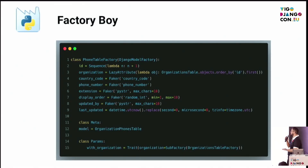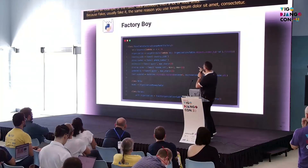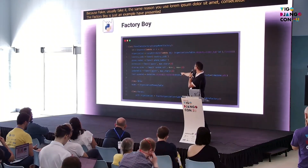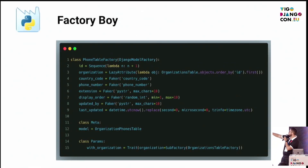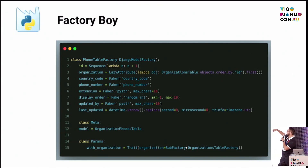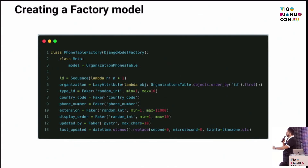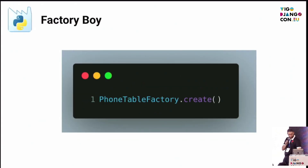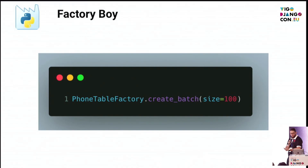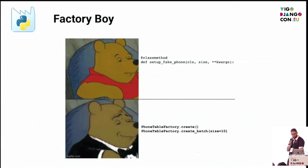And Factory Boy is just an example map to represent your model. This model is an organization for the table. You create the attributes: the ID is a sequential type, the organization links with another table, the account code uses Faker for the phone number, and so on. You need to create a factory like that. You can create a factory following this method — you can create a batch, more than one record, using create_batch. You need to use this library because you should avoid hardcoded fake data.